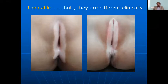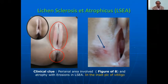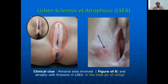Sometimes a child may come with lesions on the genitalia. There are two conditions that look alike at first. Looking more closely, one is vitiligo and the other is lichen sclerosus et atrophicus. The clinical clue for lichen sclerosus is that the perianal area is also involved in a figure-of-eight pattern, and if you look carefully there will be atrophy and erosions.